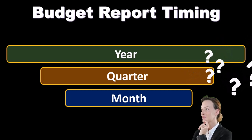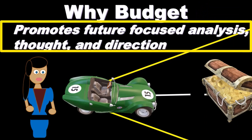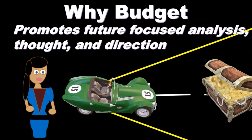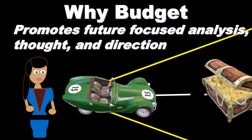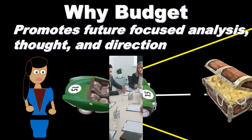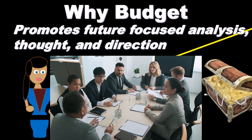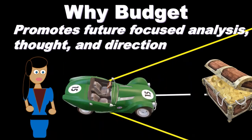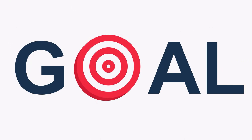Why budget? The budget promotes future-focused analysis, thought, and direction. When we consider the budget, we're focusing out into the future and getting a kind of vision statement. The long-term vision is the big picture, and the budget takes that long-term vision and puts it into digestible, actionable chunks — yearly, quarterly, monthly — allowing everybody in the organization to be focused toward the immediate goal, so day-to-day decisions can align with future objectives.